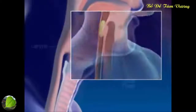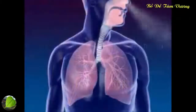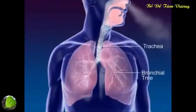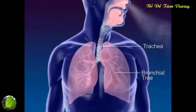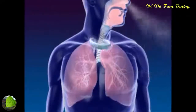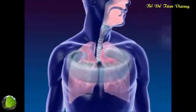The larynx, or voice box, contains the vocal folds. The trachea, or windpipe, connects the larynx to the bronchial tree. The cartilage rings of the trachea prevent the trachea from collapsing.